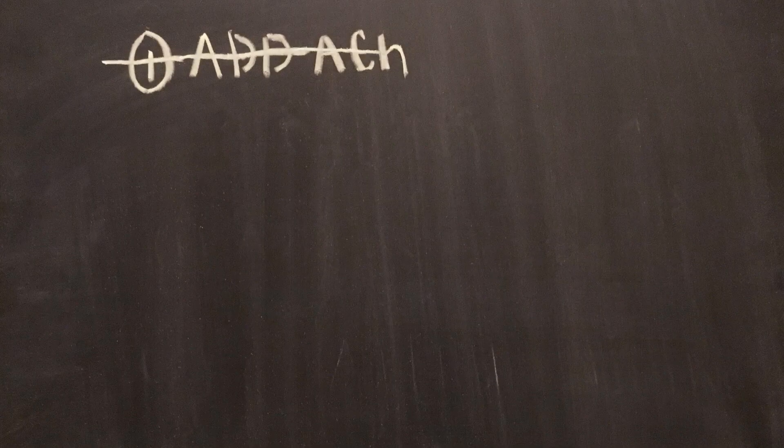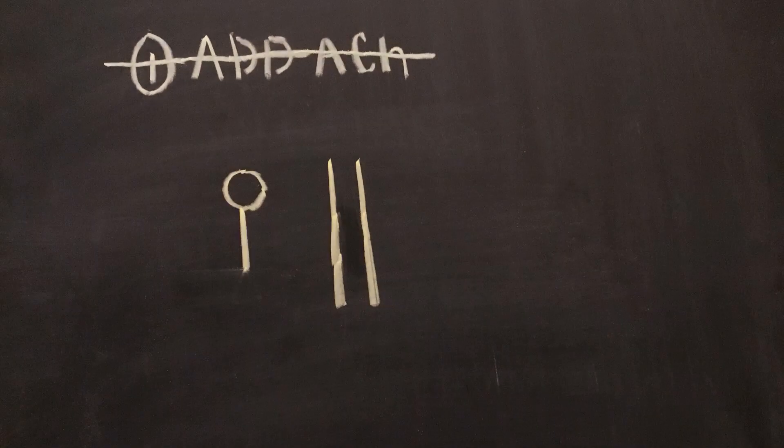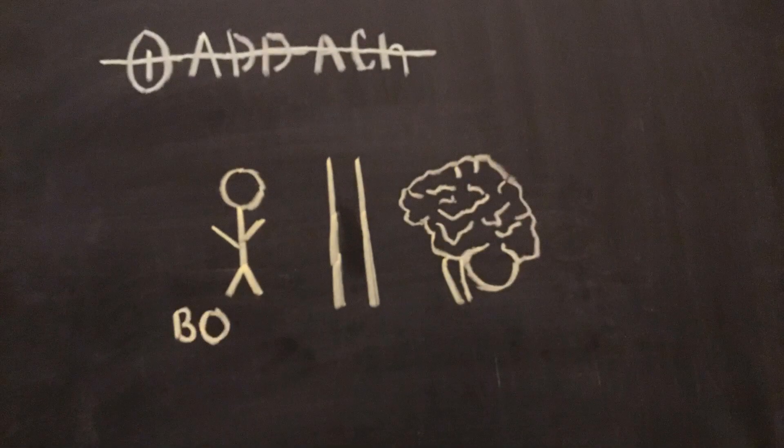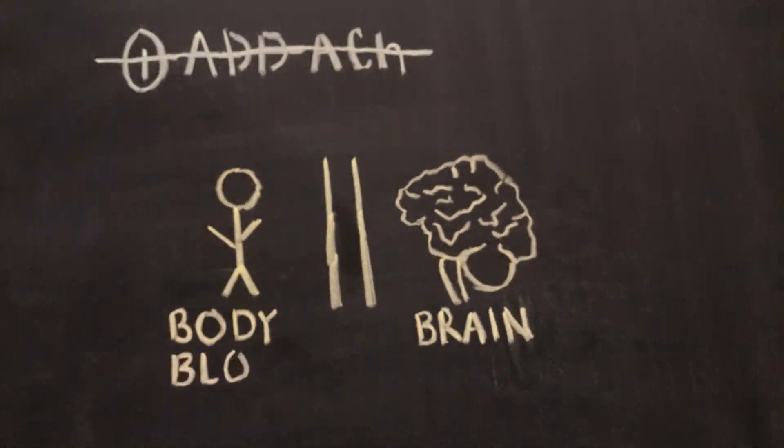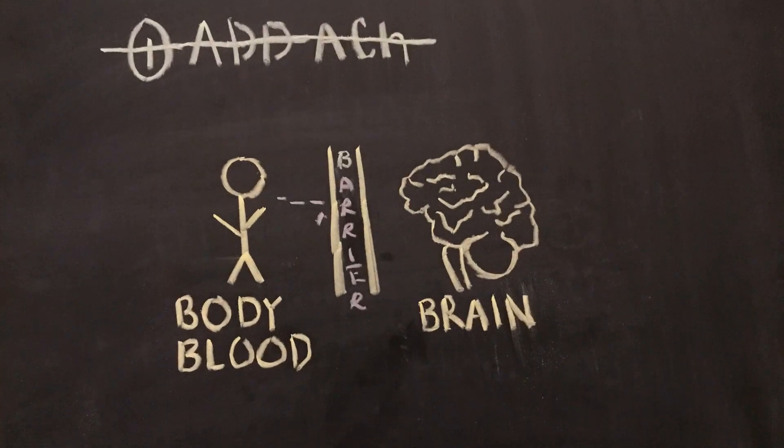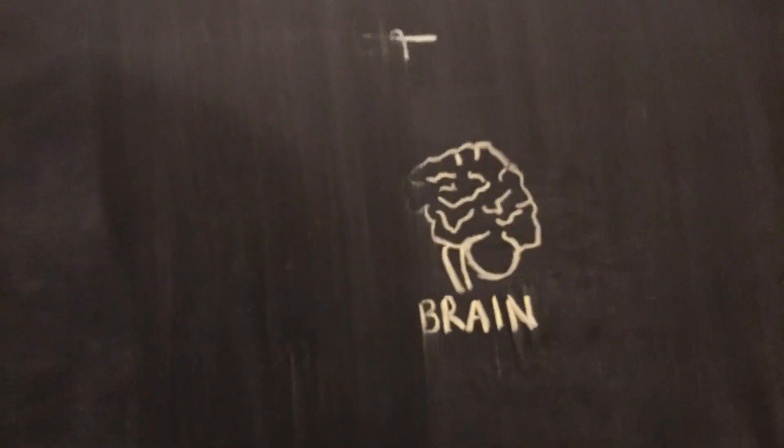However, there is no way to give acetylcholine directly because acetylcholine is not able to cross the blood-brain barrier, the filter that keeps unwanted substances out of our brain and keeps the good stuff in. That means the best way seems to be to stop acetylcholine esterase.